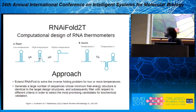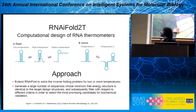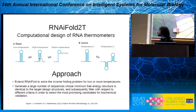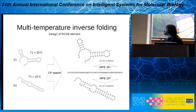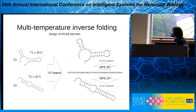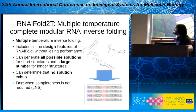We decided to take our software further and design RNA fold2T, created for the design of RNA thermometers. RNA thermometers are cis-regulatory elements that change their conformation upon temperature shift. They come in two types: RNA switches that unfold when the temperature rises, or RNA switches that fold into two different structures at two different temperatures. The challenge is solving the multi-temperature inverse folding problem: given two target structures S1 and S2 and two target temperatures T1 and T2, find the sequence whose minimum free energy structure at T1 is S1 and at T2 is S2.